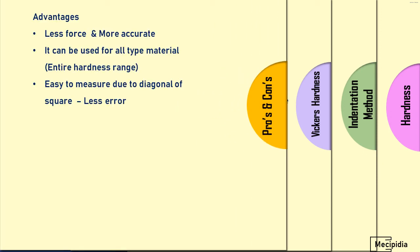Regarding advantages: less force is needed — it uses a maximum of around 1 kg load, or normally 100 grams, based on the application. It is more accurate and can be used for all types of materials across the entire hardness range. It is very easy to measure with less error because the diagonal of the square indentation can be easily evaluated without error, unlike a circular diameter in other methods. You can see the image here.